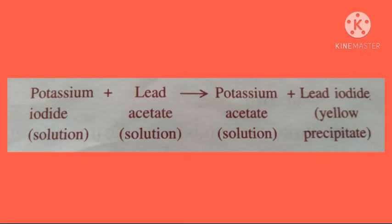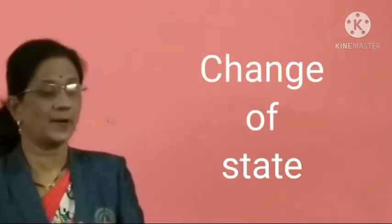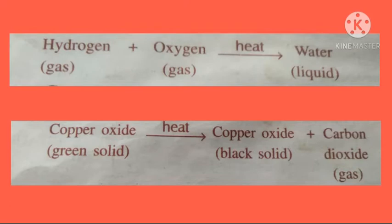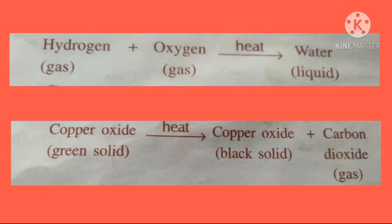The fourth characteristic of chemical reaction is the change of state. The reactants may be in solid, liquid, or gaseous state, but after the chemical reaction completes, a new substance is formed which may be in a different state. For example, when hydrogen gas burns in oxygen gas, water is formed, which under normal conditions is in liquid state — so there is a change of state from gaseous reactants to a liquid product.